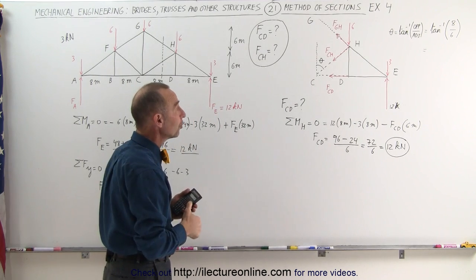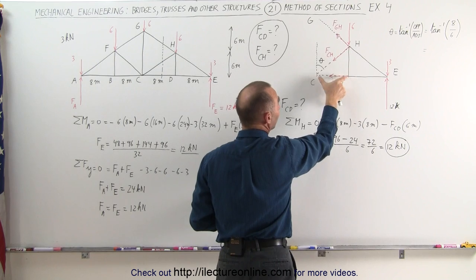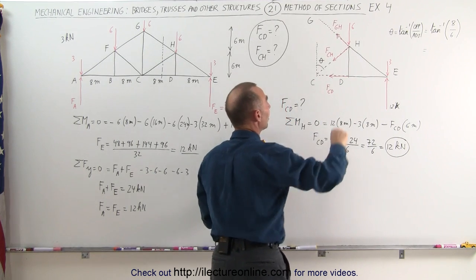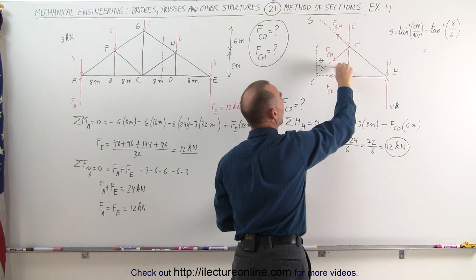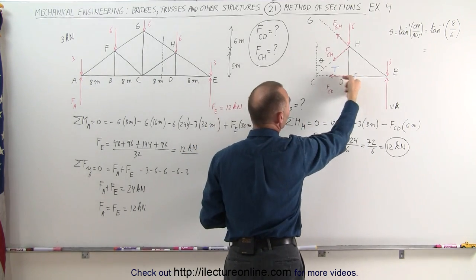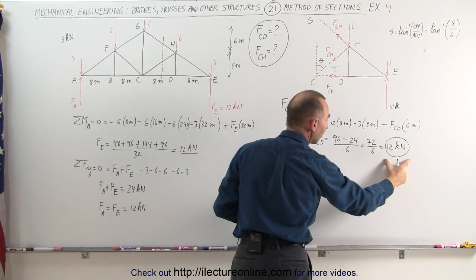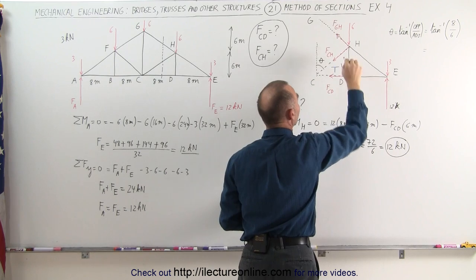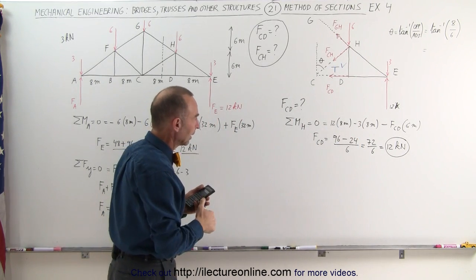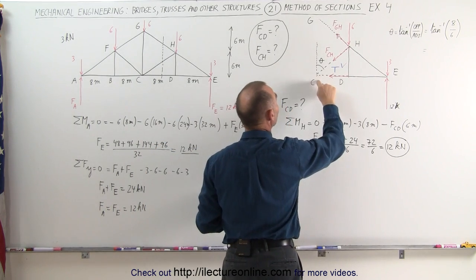Notice that the force was assumed to be in tension — drawn away from the member. Since we got a positive answer, we confirm that member CD is indeed under tension at 12 kilonewtons.